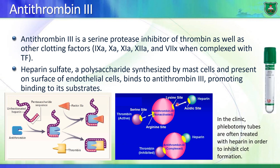Antithrombin 3, in order to function, must bind to heparin, a glycosaminoglycan. The positively charged lysine residues of antithrombin 3 interact with the active site of heparin, changing the structure of antithrombin 3 and allowing it to bind to and inactivate thrombin. This heparin sulfate is an important cofactor for antithrombin 3, synthesized by mast cells and present on the cell surface of endothelial cells. Heparin is used in laboratories and in tubes where blood is collected to prevent blood coagulation.